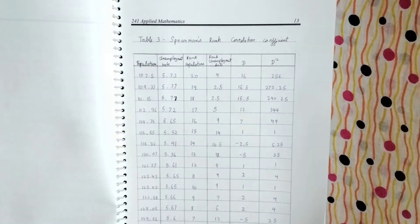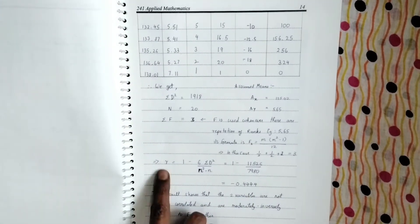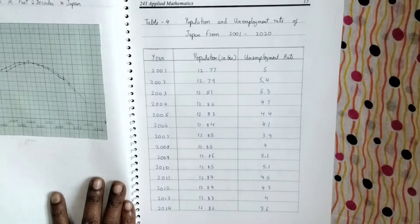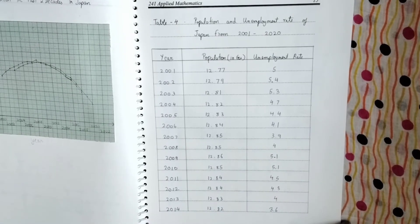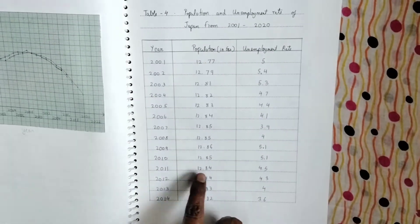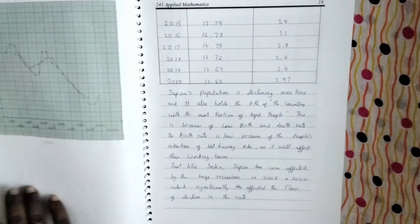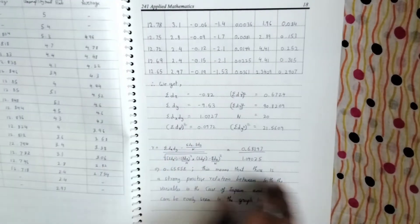And this is the Spearman's rank correlation coefficient table. Here also, here the answer what he's got R is minus 0.4444 he's got. Then the same thing is repeated for Japan. So he's taken the population unemployment rate, he's given the moving average graph, he's done all the three, four methods of finding what is R.